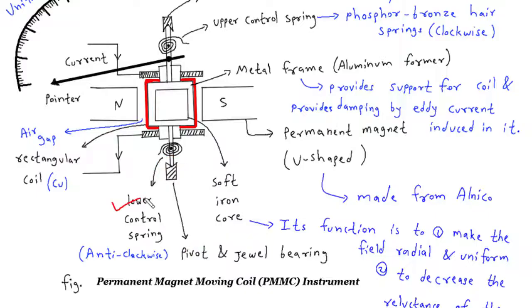Lower control spring: The lower control spring is connected to the coil and exerts a counterforce to the upper control spring. It helps maintain the balance and stability of the coil and pointer assembly, ensuring accurate readings by preventing excessive oscillation.